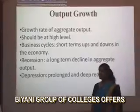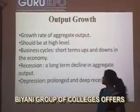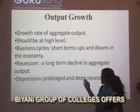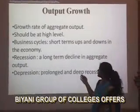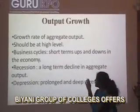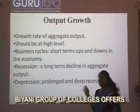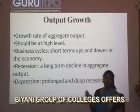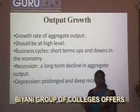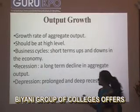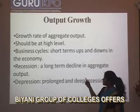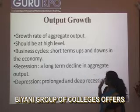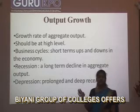The most important threat to output growth is the growth rate of aggregate output. It should be at a high level to indicate that the economy is doing well. The more the business cycles, there are short-term ups and downs in the economy.